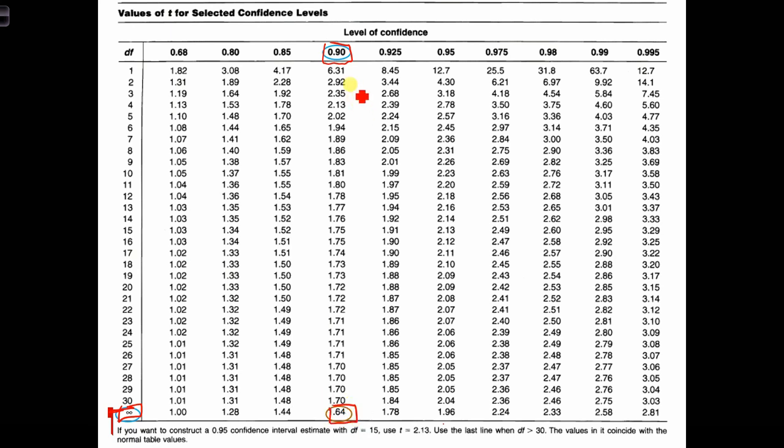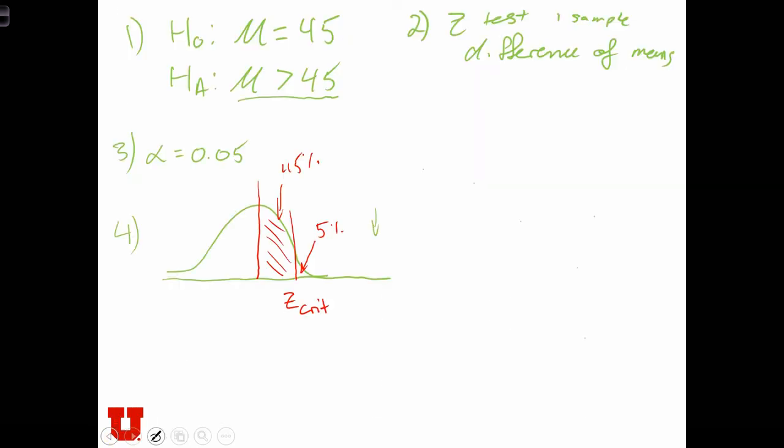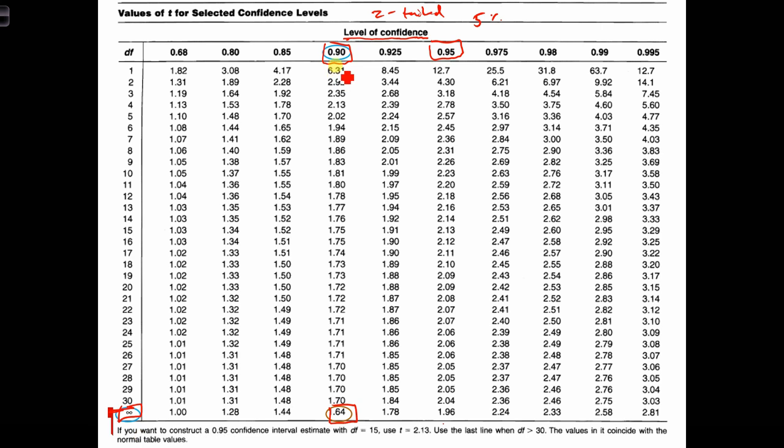Now that might be confusing for some of you, because the significance level is 5%. So a lot of you will be thinking, why aren't we using the 95% level of confidence? And the answer is that with levels of confidence, these are all assuming two-tailed levels of confidence. So in other words, if we select a 90% level of confidence, that's going to put 10% in two tails. So it's going to put 5% in one tail and 5% in the other tail. If you look at our picture, that's exactly what we're looking for. We're looking for 5% to be in this tail over here. In that case, we need to use the 90% level of confidence.